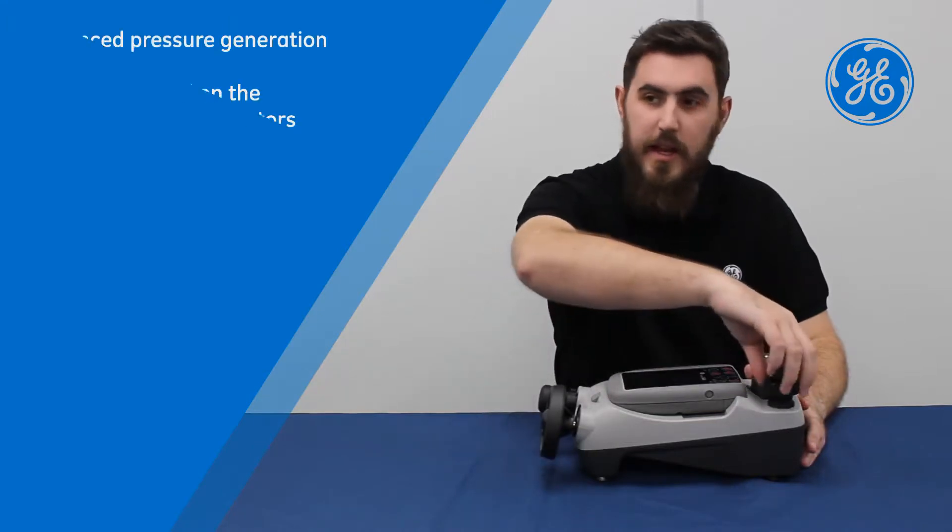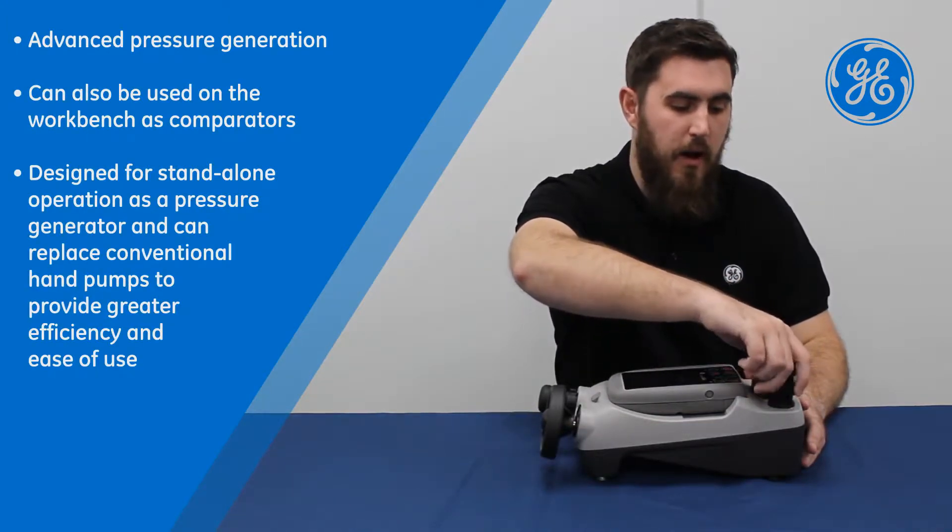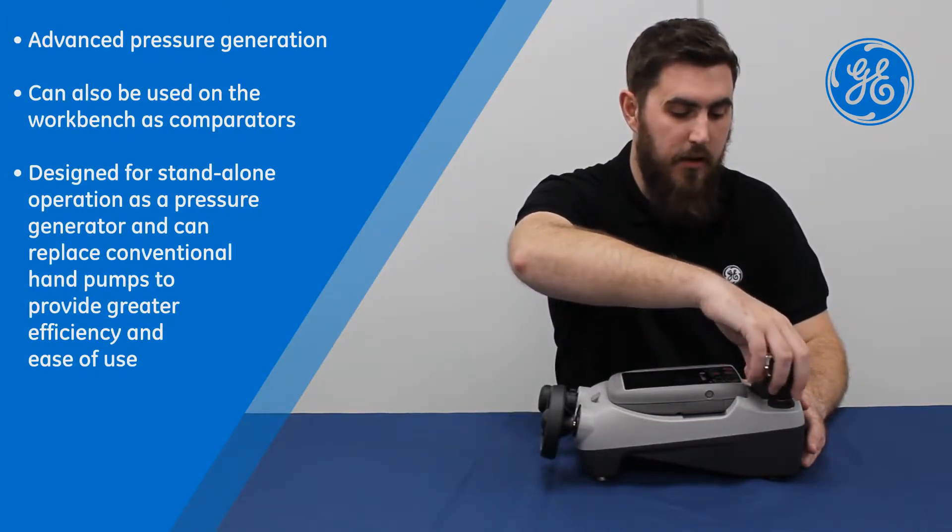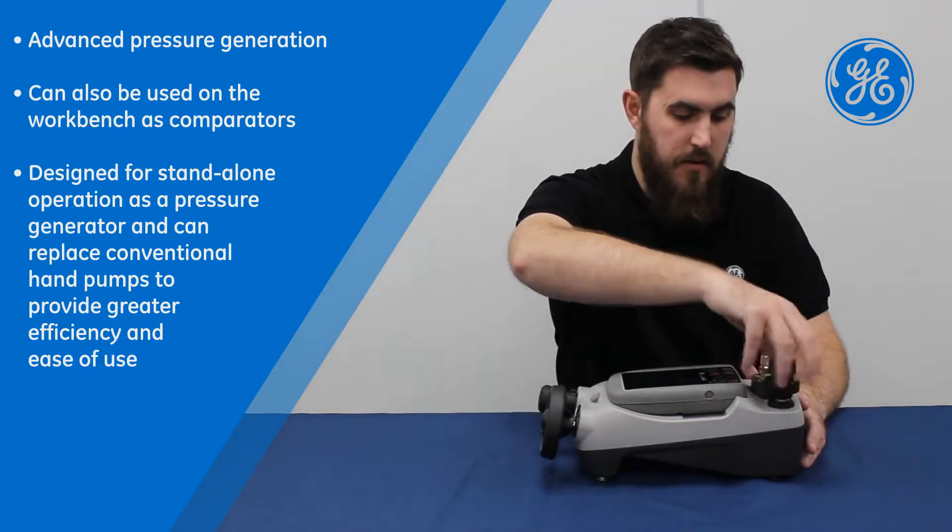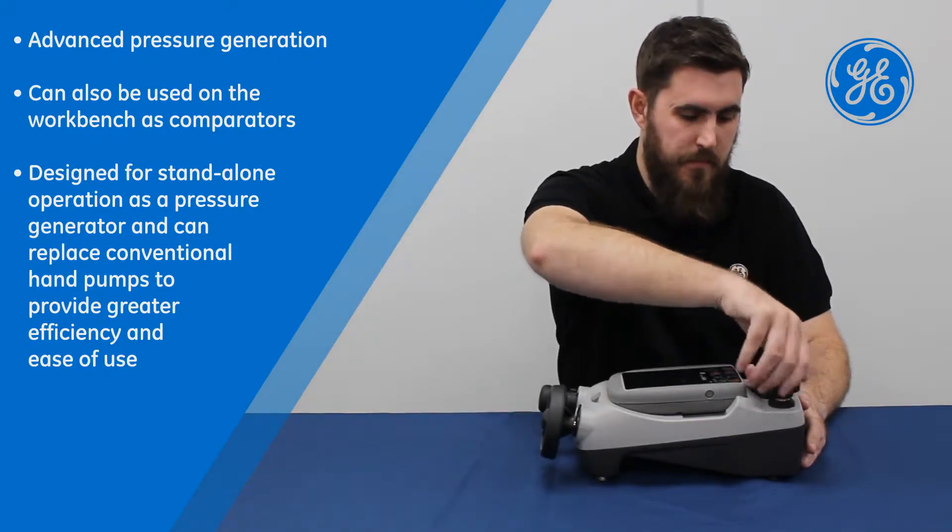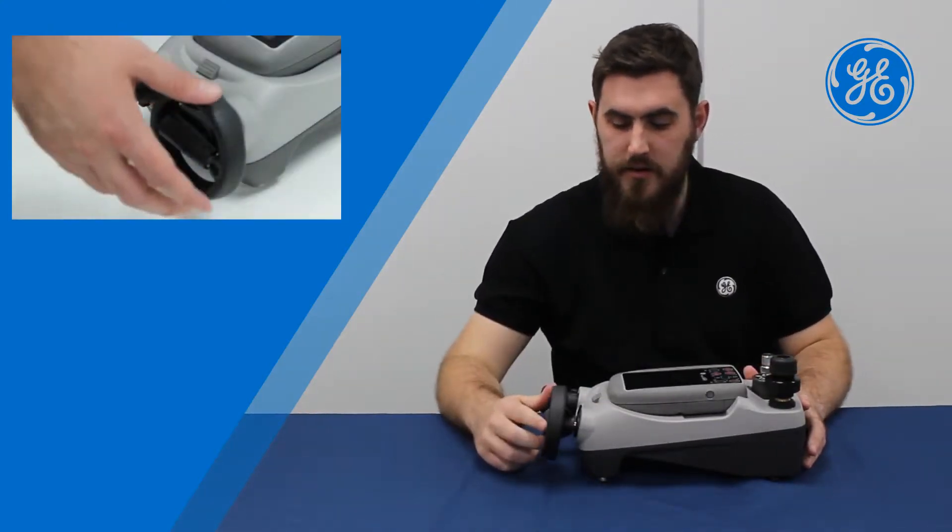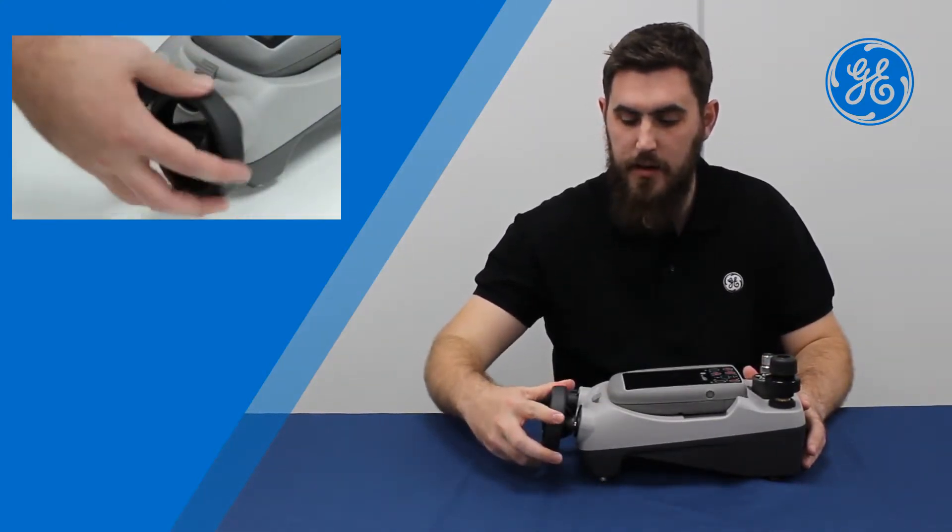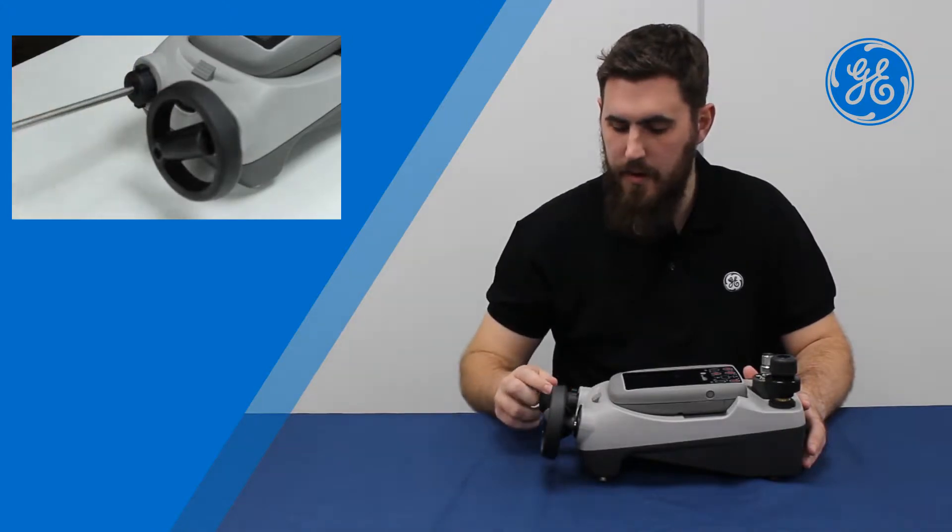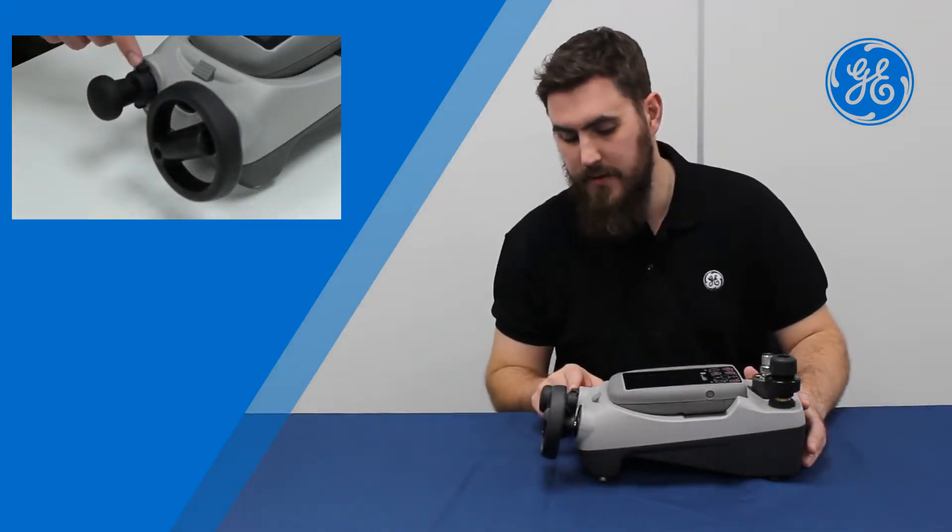So first off, I've got to make sure my changeover valve is in the fully upright position, so fully anti-clockwise. And my pressure release valve is shut. And also my volume adjuster is fully anti-clockwise in the out position. And my pump is set with plus in the upright position.